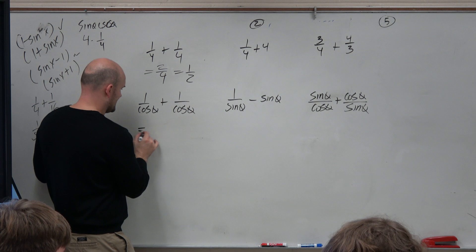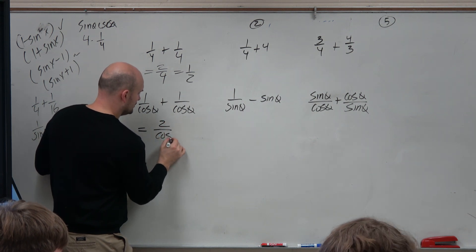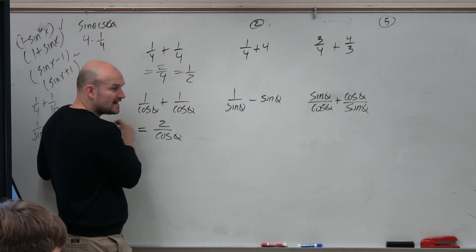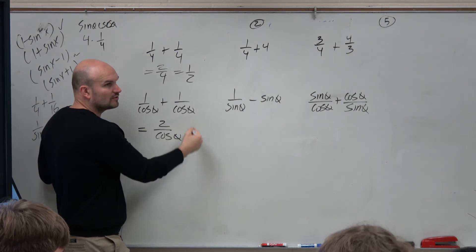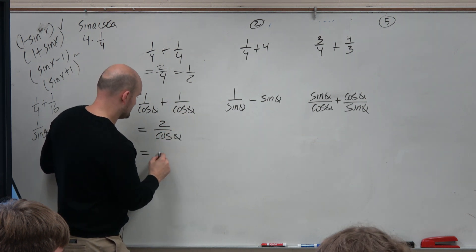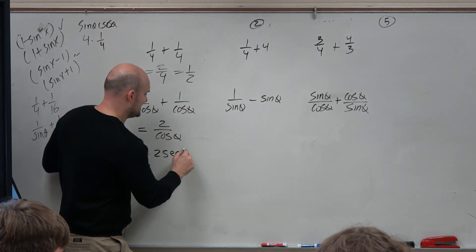So in this, we could recognize it to be 2 over the cosine of theta. But could I simplify that a little bit? Yeah, cosine's in the denominator. Typically we don't want to write our answer as a fraction, we just want to write it as a single trigonometric function. So therefore, I could write this as 2 secant of theta.